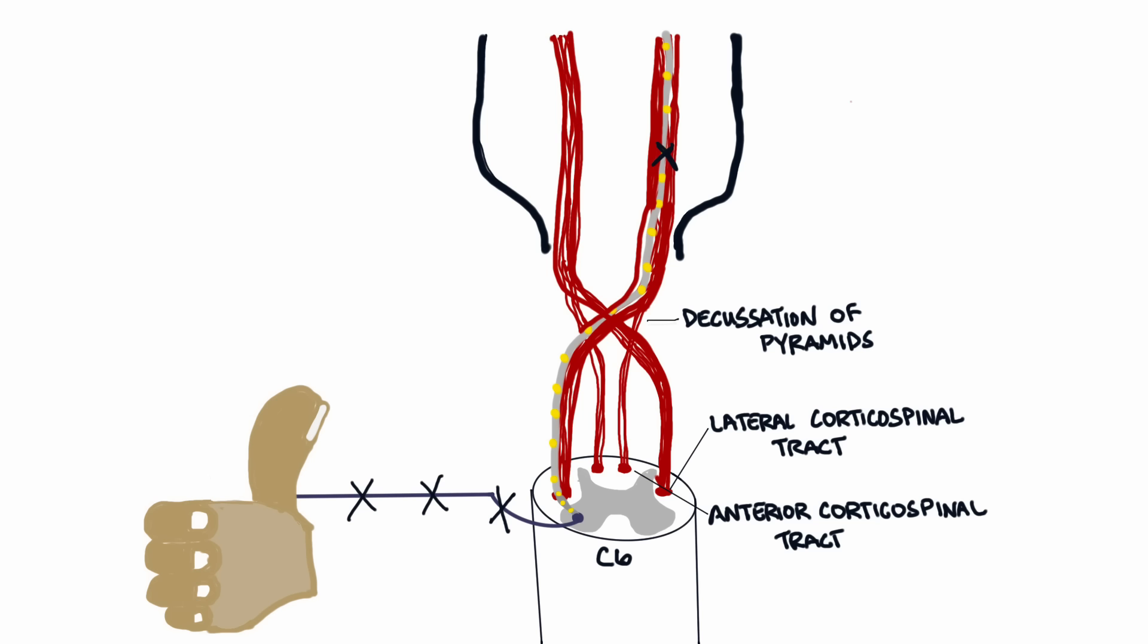What happens if the lower motor neuron is damaged? There will be no information sent to the muscles. There is no connection. The brain and Umberto are still fine, but now we lost Luigi, so there is no connection to the muscles. If you don't use it, you lose it, so atrophy of the muscles is prominent. Muscle tone is lost. The lower motor neuron is not working, so there are no reflexes.